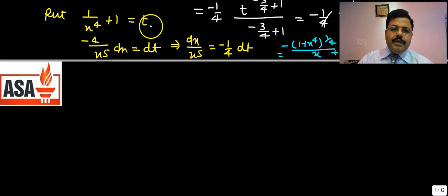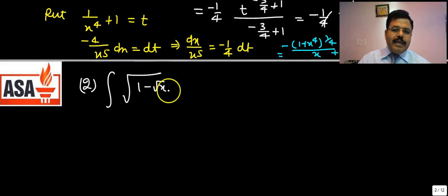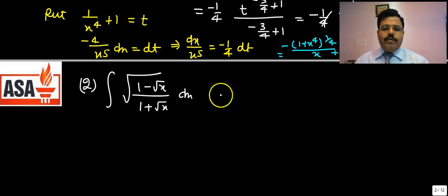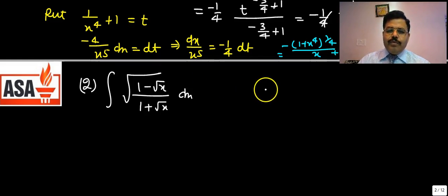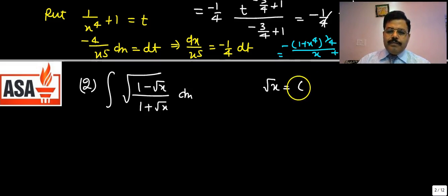Now question number 2: ∫√((1−√x)/(1+√x)) dx. This is also an irrational function. To answer such a question, we put the substitution √x = cos θ, or equivalently x = cos²θ.